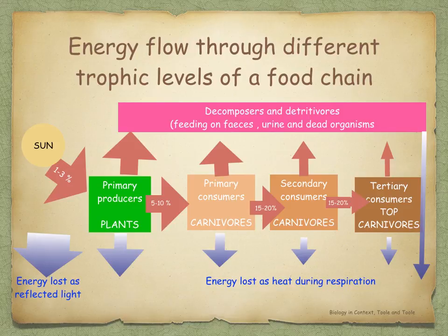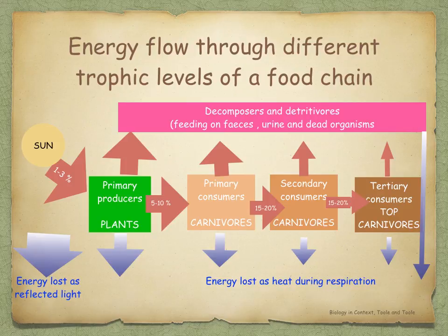Looking at this diagram, notice how energy is lost between the different trophic levels — a lot of it as heat during respiration. Only 1% to 3% of the sun's energy is used by the primary producers. Then 5% to 10% goes to the primary consumers, and 15% to 20% of that goes to the secondary consumers, and 15% to 20% of that goes to the tertiary consumers. So as you go along a food chain, energy is lost at each trophic level.